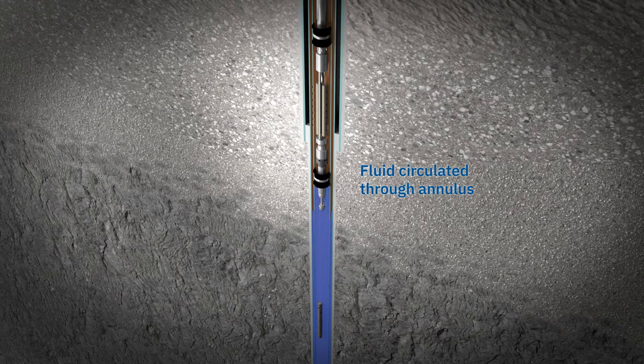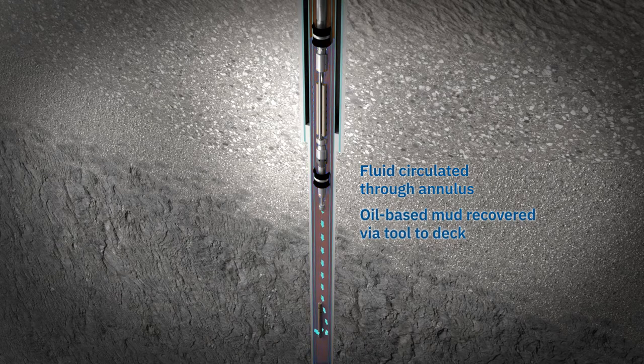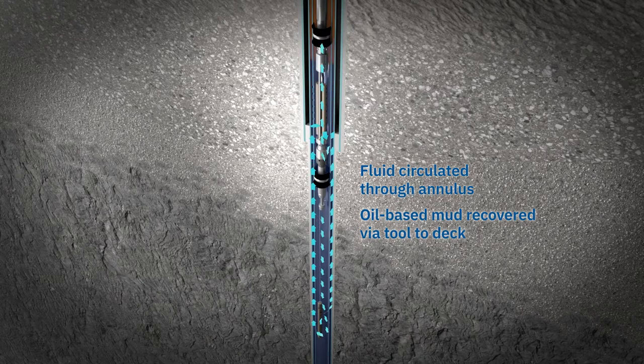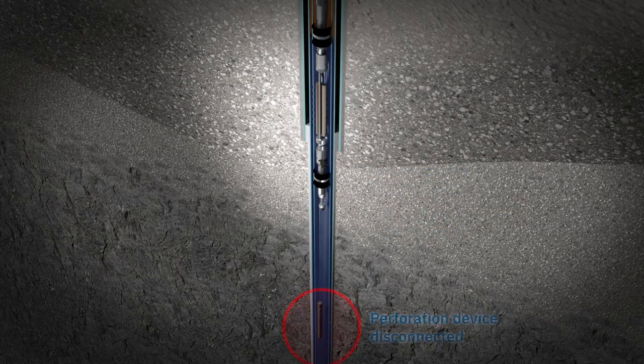Operation of the lower and upper perforating devices creates a flow path through the casing and back to the vessel, through which contaminated fluids such as oil-based mud can be recovered and disposed of safely.